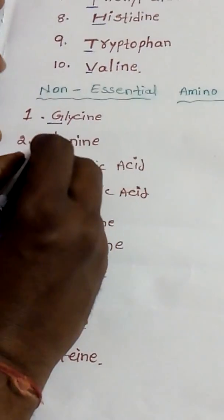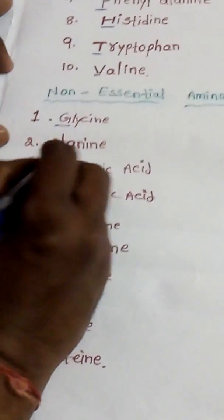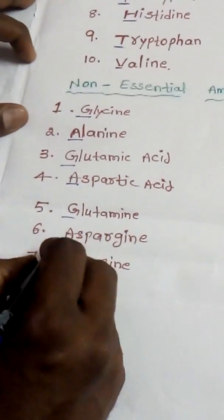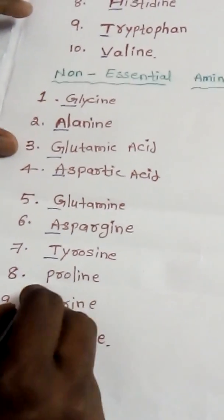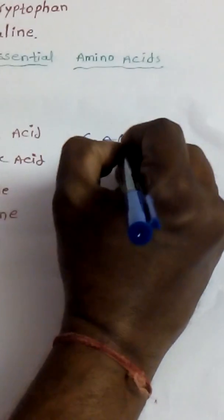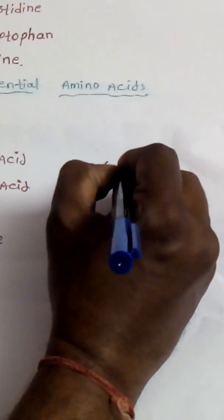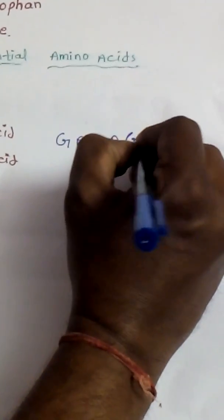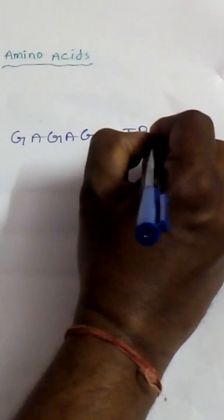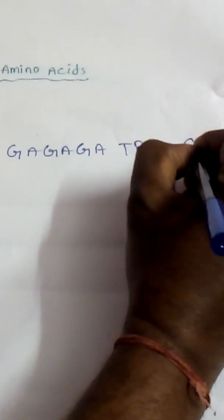Here we take G for glycine, A for alanine, G for glutamic acid, A for aspartic acid, G for glutamine, A for asparagine, T for tyrosine, P for proline, S for serine, and C for cysteine. So if we write them together, we get: G, A, G, A, G, A, T, P, S, C.